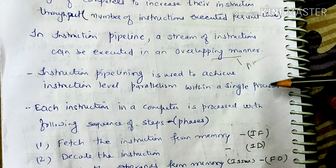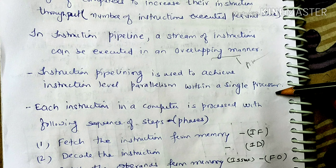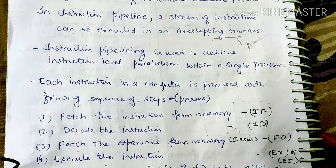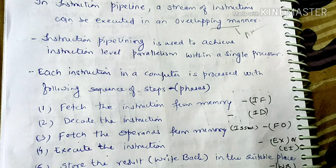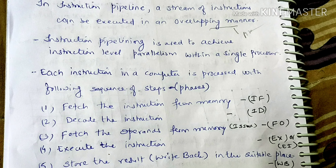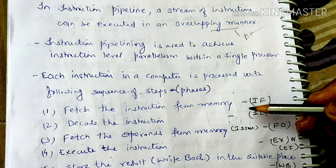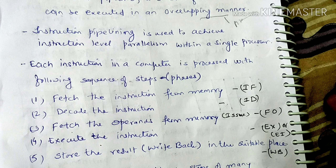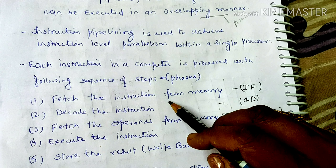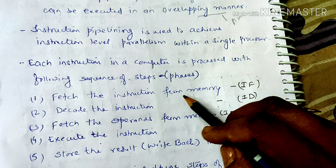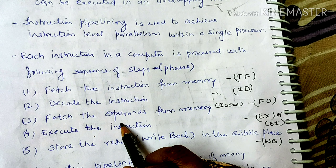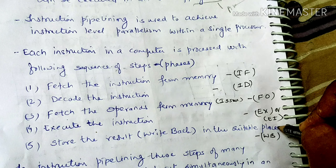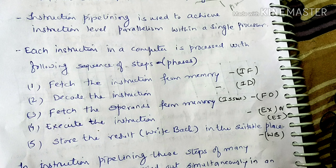An instruction pipeline is used to achieve instruction-level parallelism within a single processor. We execute multiple instructions in pipeline fashion. Instructions are also called an instruction cycle, which includes stages such as fetch the instruction from memory, decode, fetch operands, execute, and write the result to a suitable place in memory.